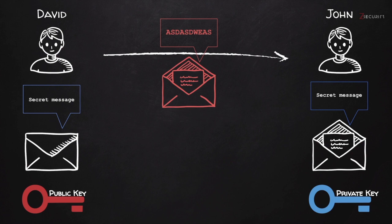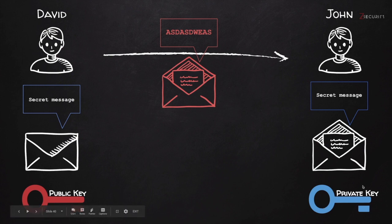Therefore, David can send the message to John in any way he wants — as a text message, an instant message, or even using an insecure service. That's fine because if anybody reads the message they will see gibberish; they won't be able to see the content unless they have the private key. And as long as John doesn't share the private key, nobody will be able to read this message except for John.